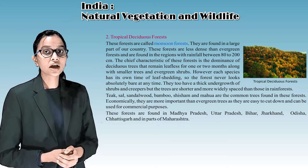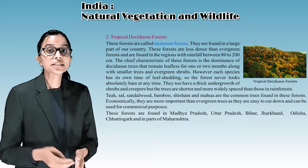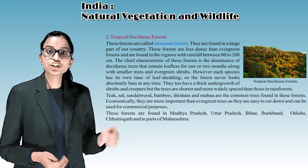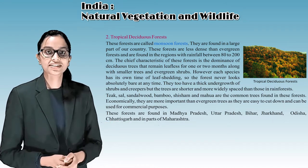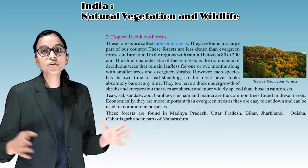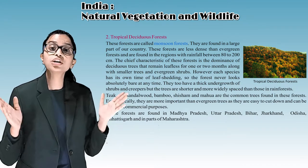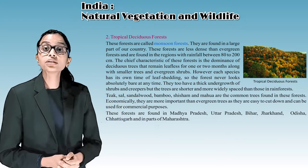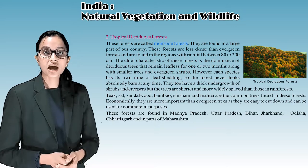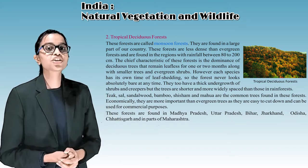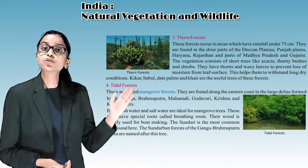These forests have a thick undergrowth of shrubs and creepers, but the trees are shorter and more widely spaced than in rainforests. Teak, sandalwood, bamboo, shisham, and mahua are common trees found here. Economically they are more important than evergreen forests as they are easy to cut and can be used for commercial purposes. These forests are found in Madhya Pradesh, Uttar Pradesh, Bihar, Jharkhand, Odisha, Chhattisgarh, and parts of Maharashtra.